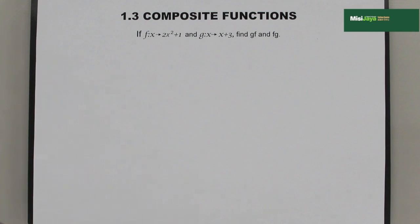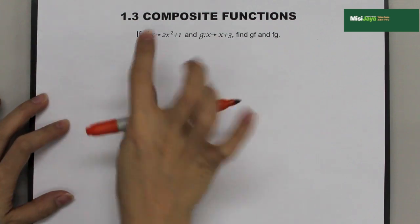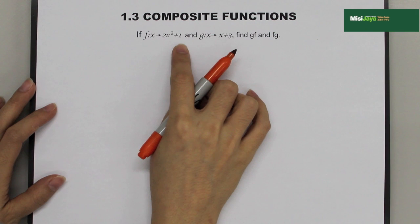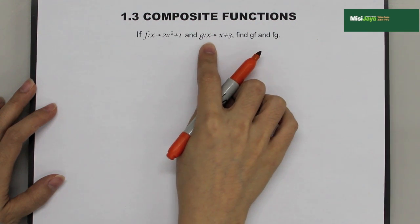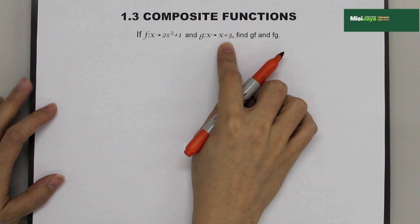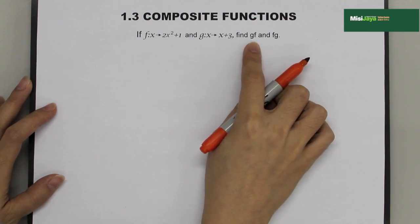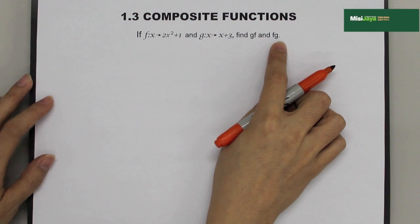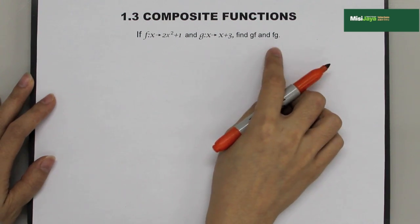This is an example of a question for composite functions. If f(x) = 2x² + 1 and g(x) = x + 3, find gf and fg. So, there are 2 questions here that we have to answer.